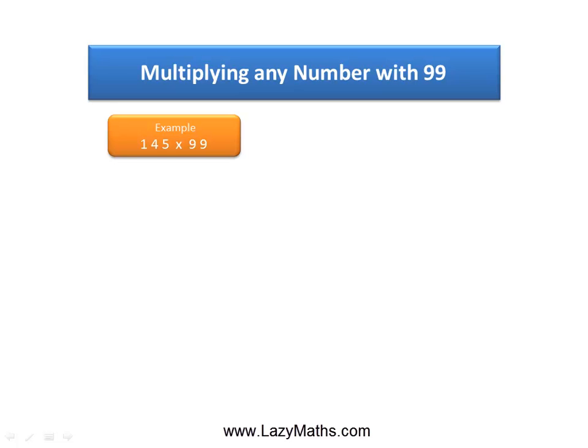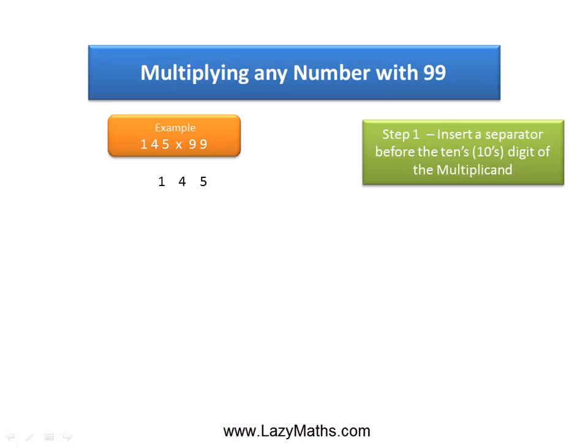Here is an example of multiplying any number with 99. 145 times 99. The first step is to insert a separator before the tens place digit in the multiplicand. In this case, the tens place digit is 4. So, we insert a separator right before the 4 of 145.